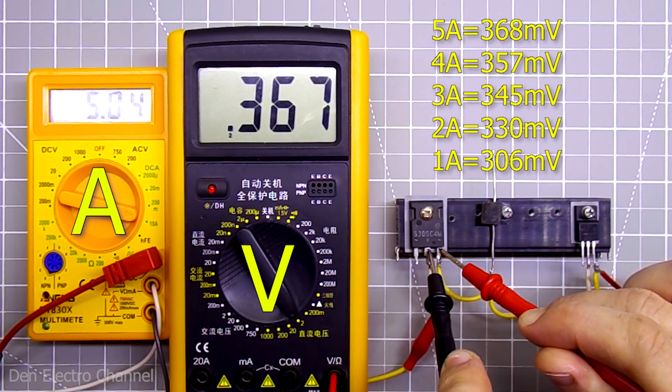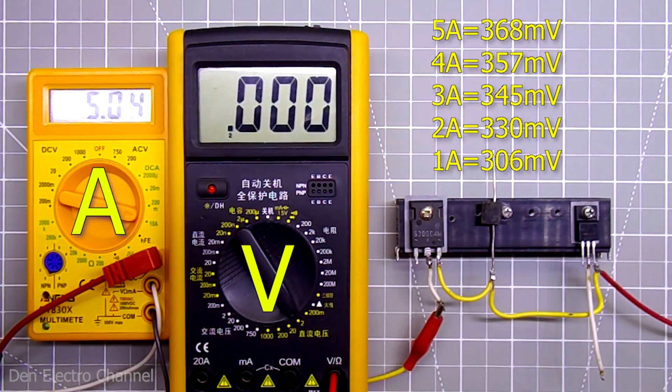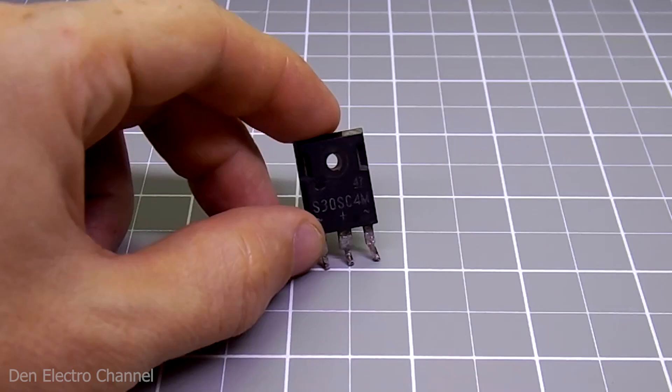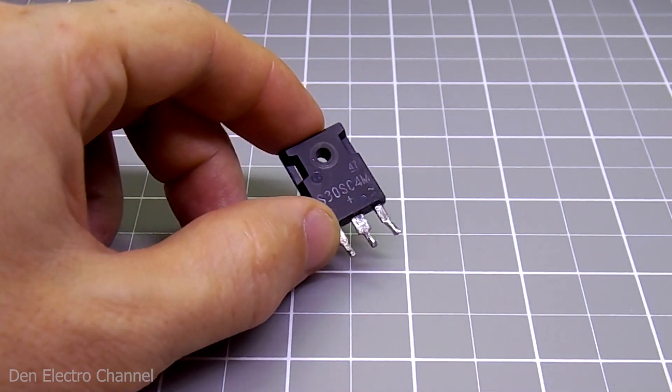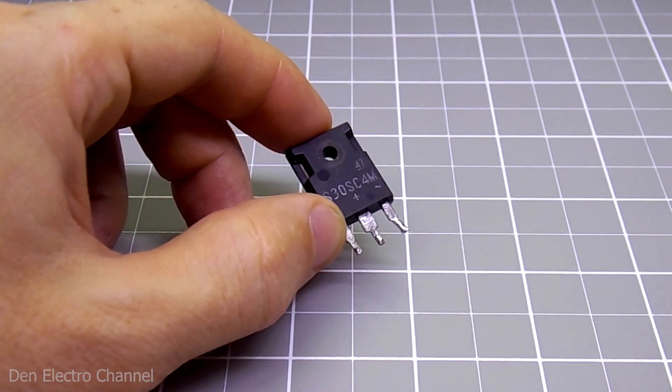From this experiment, it becomes clear that the more current flows through the diode, the greater the voltage drop on it becomes. To find out what the voltage drop will be on this diode at its maximum 15 amps,